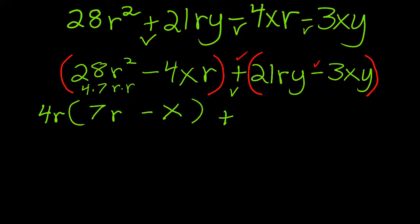And here, remember that 21 is 7 times 3. So each of the terms in the second set of parentheses contains a 3 and a y. So I'll pull out 3y as the greatest common factor, and that will leave me with 7r minus x.